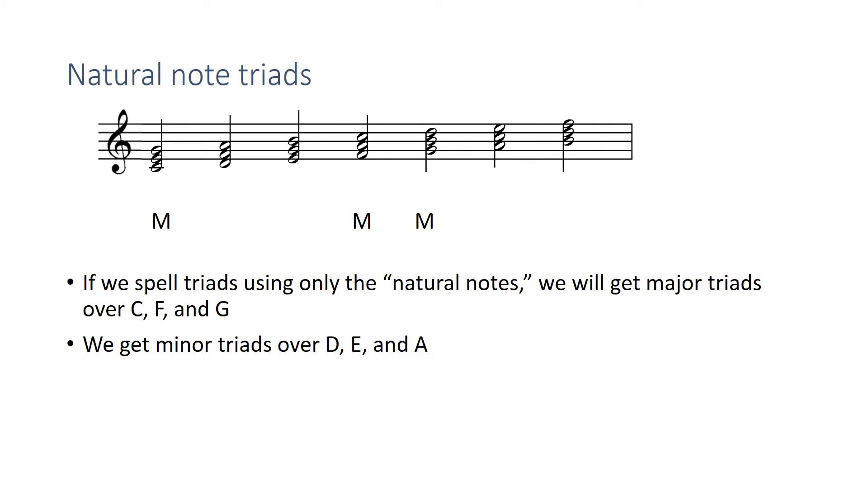The other triads, though, we have minor over D, E, and A. You might remember the drug enforcement agency or something. Those are my minor triads, my natural note minor triads. And the last one, because we get a minor third over B also, but because of the diminished fifth from B to F, we get a diminished triad over B. So it's kind of different. The B stands alone.